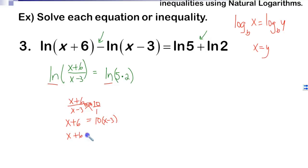So x plus 6 equals 10x minus 30. Now it's a matter of just solving for x. I'm going to subtract x from both sides. I'm going to add 30. So I have 36 equals 9x, divide by 9.